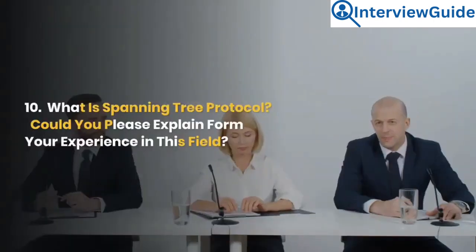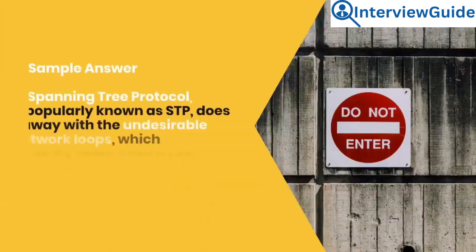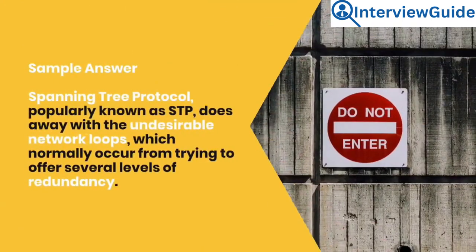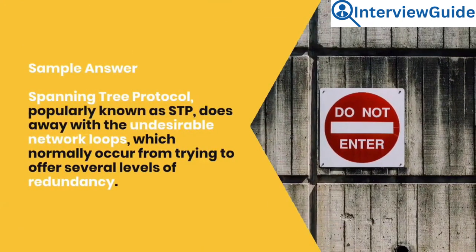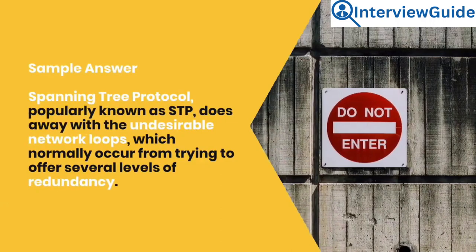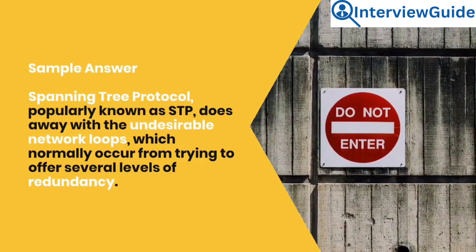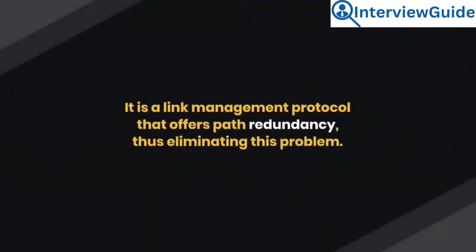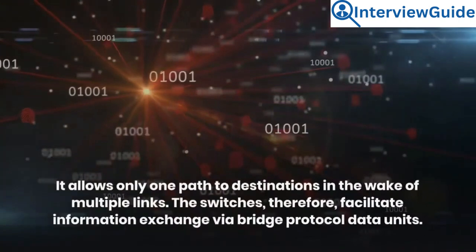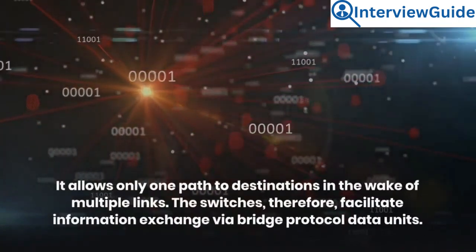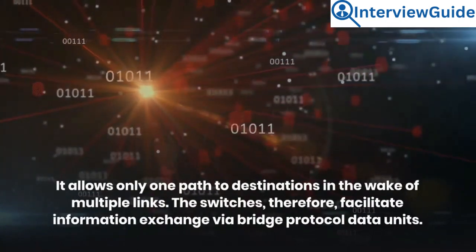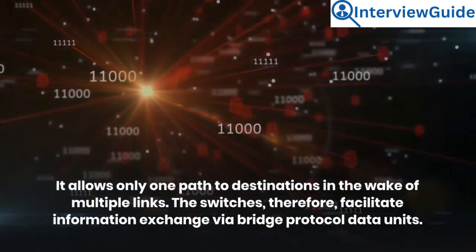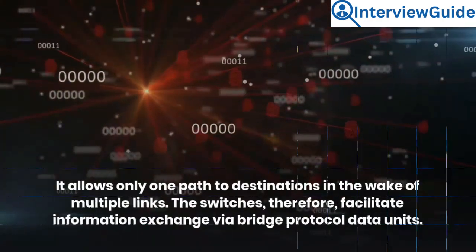Question 10: What is Spanning Tree Protocol? Spanning Tree Protocol, popularly known as STP, does away with undesirable network loops, which normally occur from trying to offer several levels of redundancy. It is a link management protocol that offers path redundancy, thus eliminating this problem. It allows only one path to destinations in the wake of multiple links. The switches therefore facilitate information exchange via Bridge Protocol Data Units.